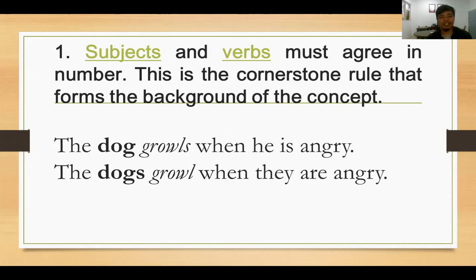Sedangkan pronoun she, he, dan it selalu menggunakan S atau ES pada kata kerja dalam present tense. They, we, I, you tidak bisa menggunakan S atau ES dalam kalimat apabila dalam bentuk present tense.